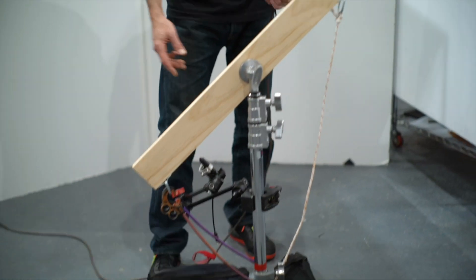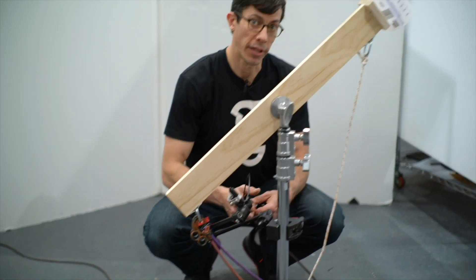So now we have our button. I'm going to put an extension cable on it that'll go over to where the camera is. Once the pocket wizard is triggered, it'll have a tiny delay before firing the camera.